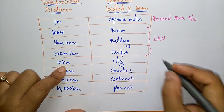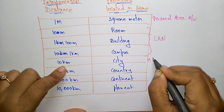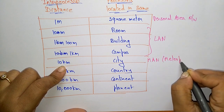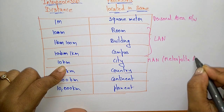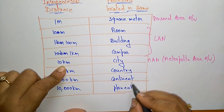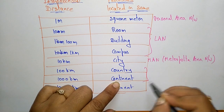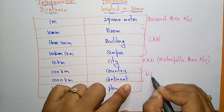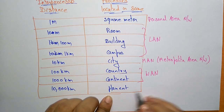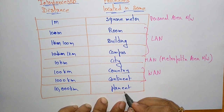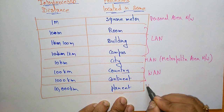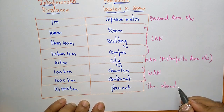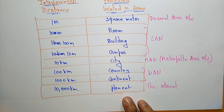If it is in the city, we use the MAN — that is the Metropolitan Area Network. If it is in the country or continent, we can go for the Wide Area Network (WAN). And if it is at the planet scale — above 10,000 kilometers — you can go for the Internet.